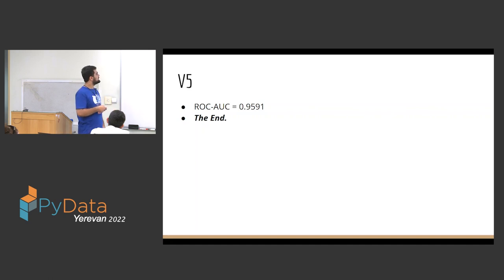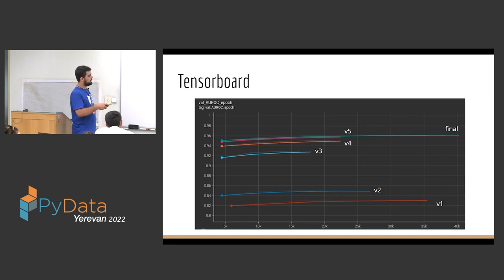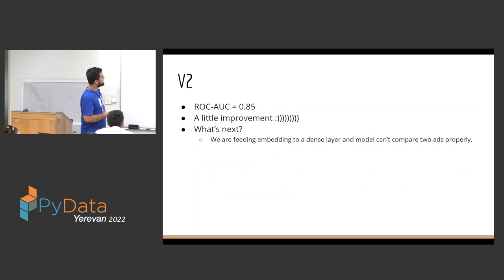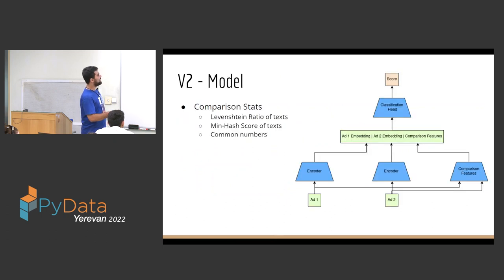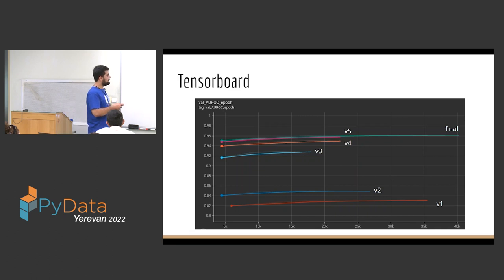Looking at the TensorBoard of our experiments: the first run was text-only, then comparison features gave a small improvement, adding embedding differences gave the biggest jump, then images added a little more, and finally the extended feature set brought the final result. The last retrain was prepared for production.